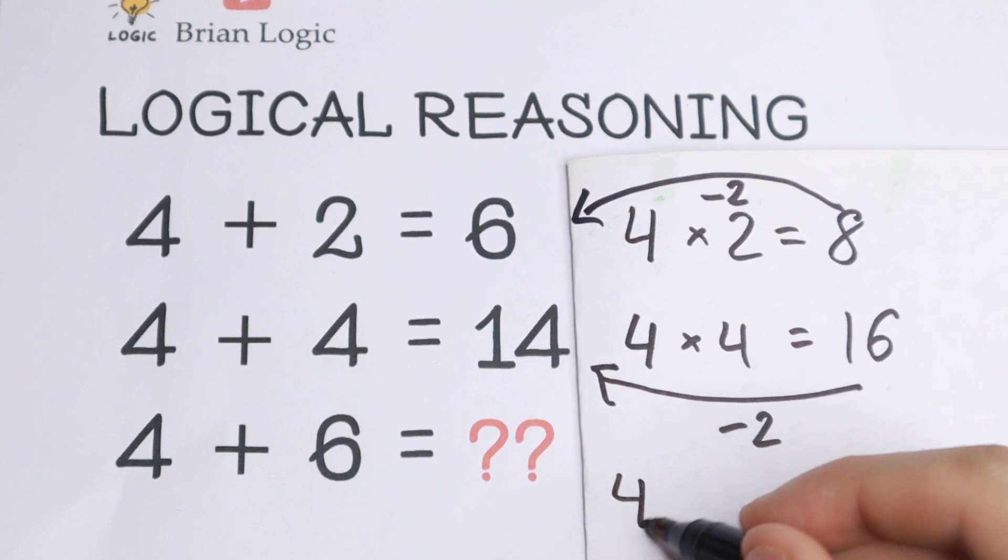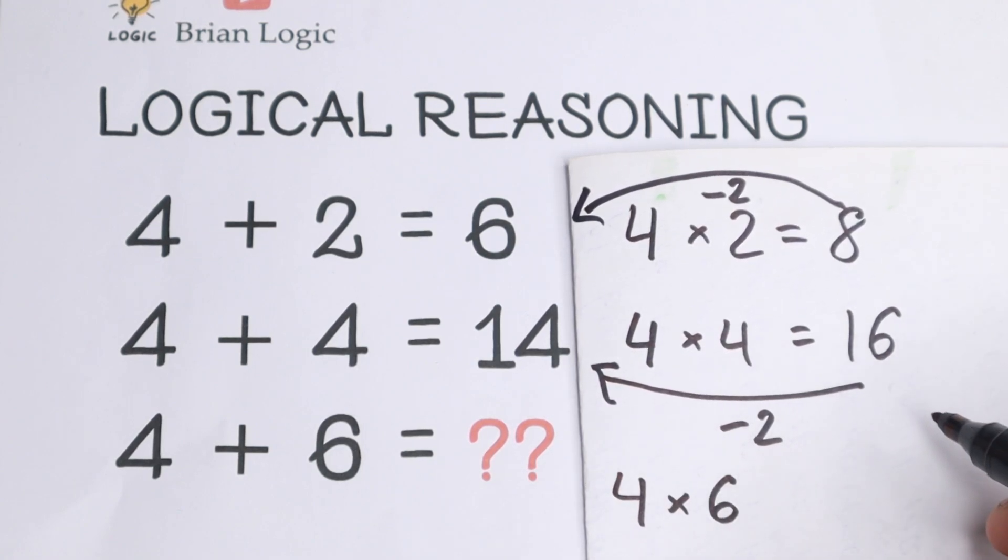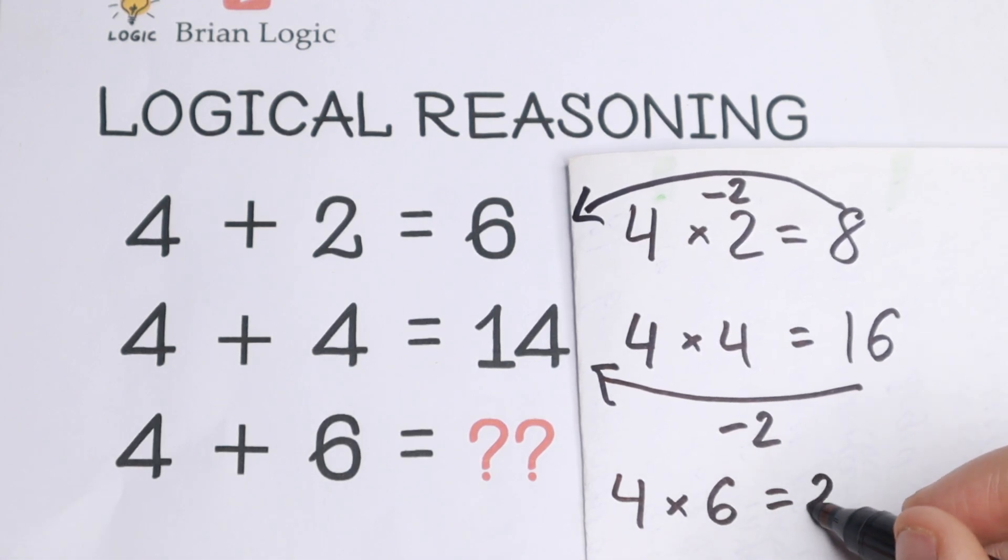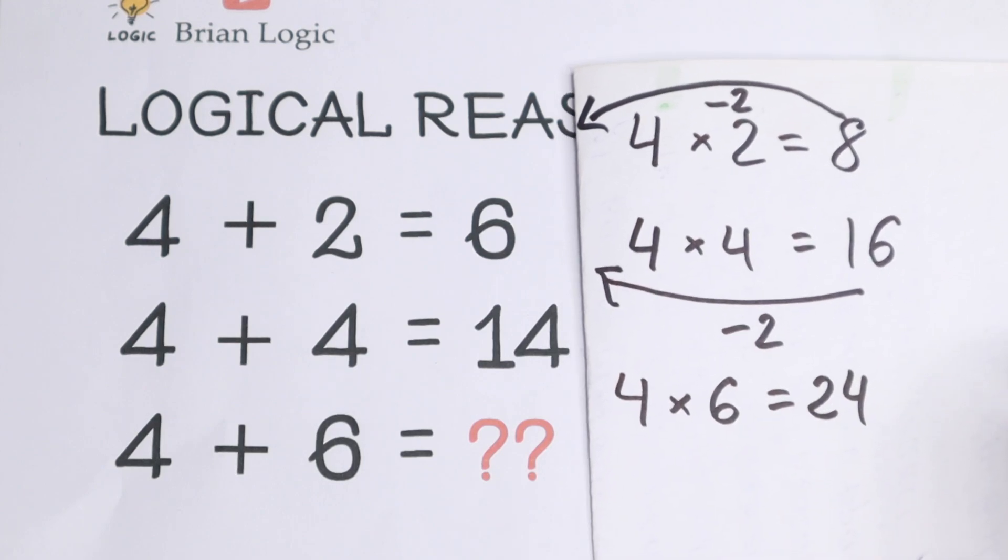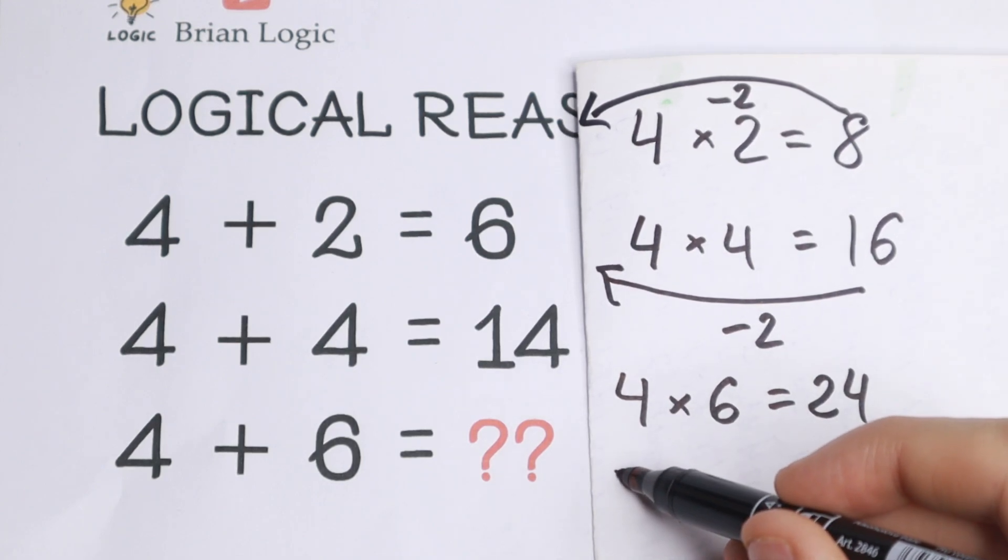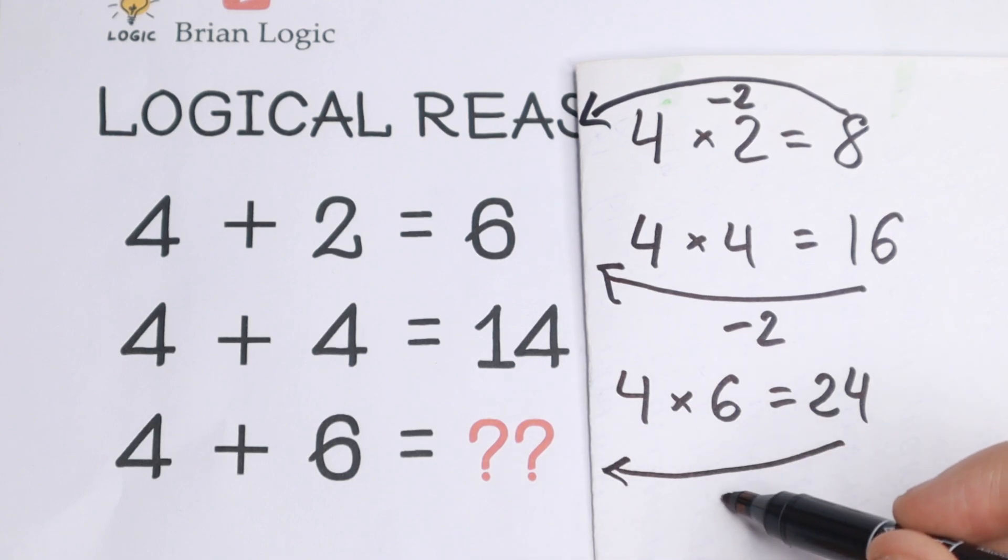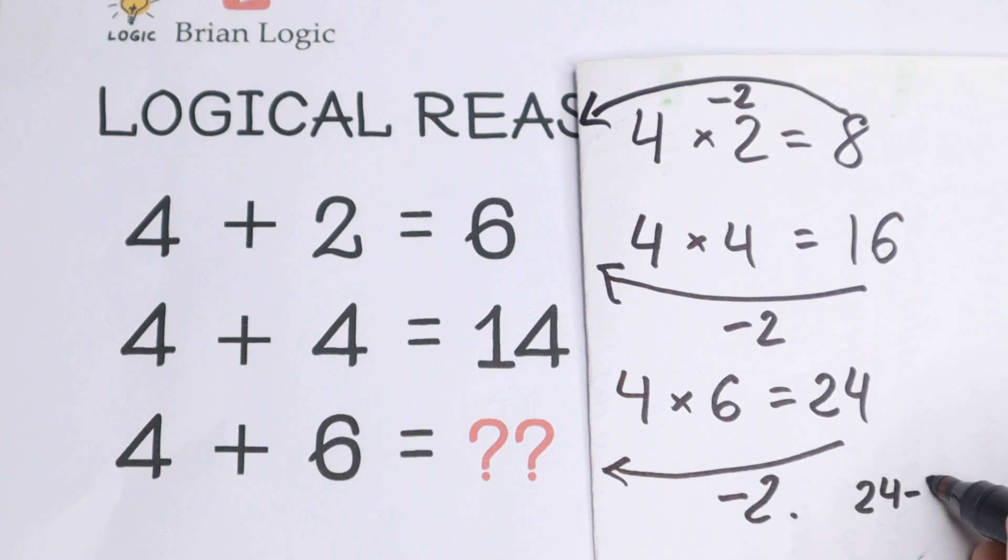So take a look, 4 times 6, using the same logic, multiplying these two numbers, we will have 24. And the pattern between all of these numbers, we need to subtract 2. So from this 24, we need to subtract 2. And as you can see, our final answer, 24 minus 2, we will have 22. And this will be our answer.